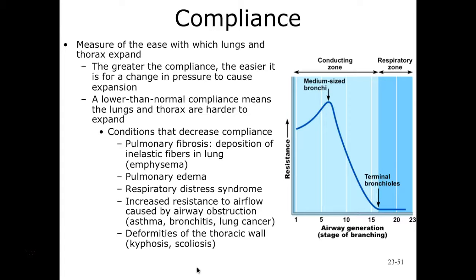The greater compliance we have, the easier it's going to be to change the pressure and allow our thoracic cavity to expand. If we have lower than normal compliance, our lungs and thorax are going to have a harder time expanding. A normal person has a compliance of 0.18 liters per millimeter mercury, meaning for every one millimeter mercury change in intra-alveolar pressure, the volume changes by 0.18 liters.